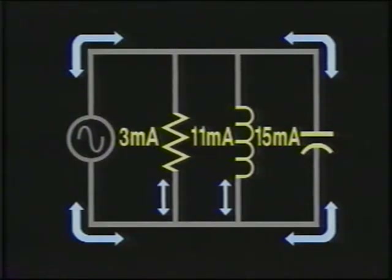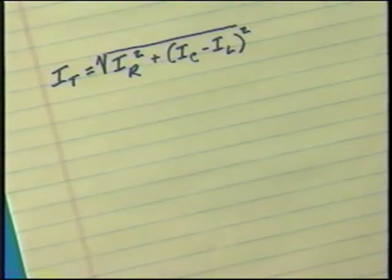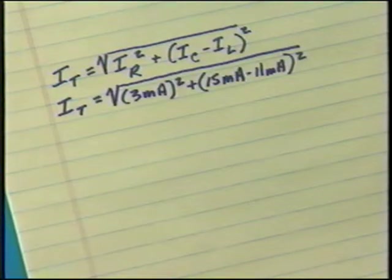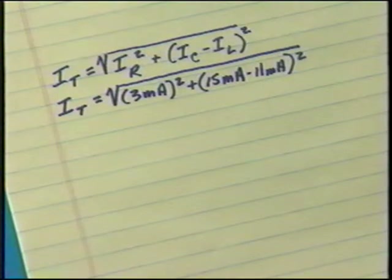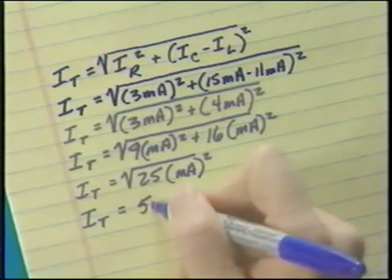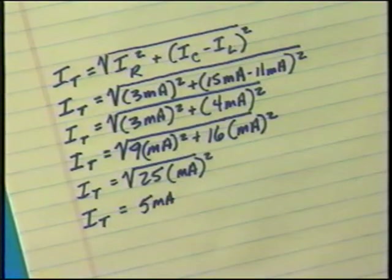As an example, suppose you have a parallel RLC circuit with a resistive current of 3 milliamps, an inductive current of 11 milliamps, and a capacitive current of 15 milliamps. Substituting into the formula yields I sub T equals the square root of 3 milliamps squared plus the square of the quantity 15 milliamps minus 11 milliamps, producing a total RLC circuit current of 5 milliamps.